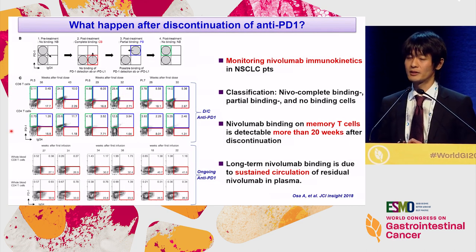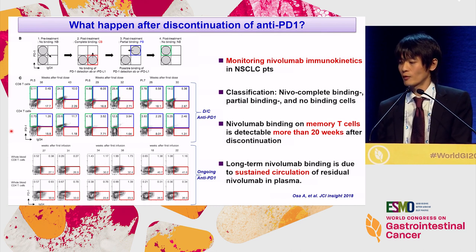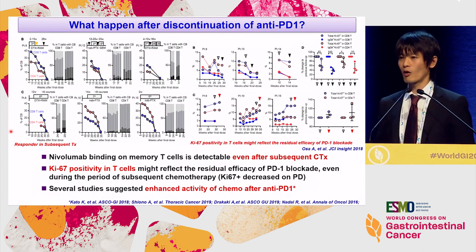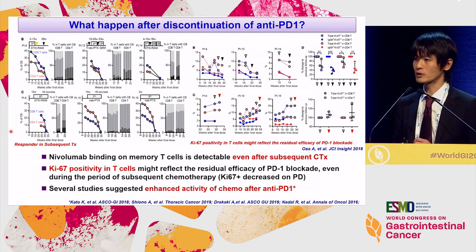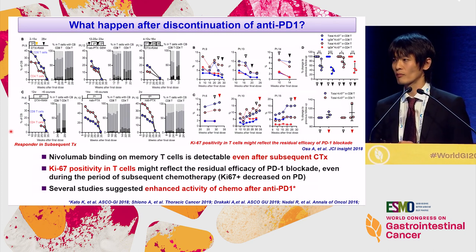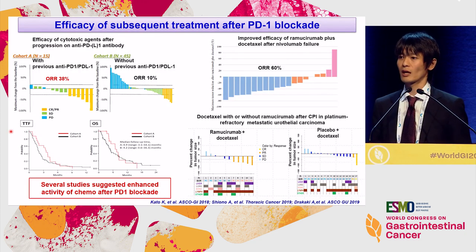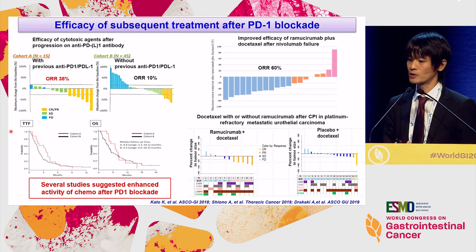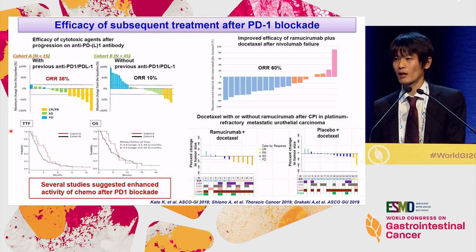An important caveat is that treatment duration is not the same as effective treatment period. A very interesting paper published in JCI Insight from a Japanese group investigated binding of anti-PD-1 on memory T cells. It was detectable even after five months since last administration of anti-PD-1 therapies, and also detectable even after subsequent therapy. Ki67 positivity in T cells predicted outcome after discontinuation and efficacy of subsequent therapy. This may partially explain the carryover effect or enhancement of subsequent treatment. Not a few reports have suggested better activity of cytotoxic agents or molecular targeting agents after checkpoint blockade, including gastric cancer data from Japan showing very high response rates after checkpoint blockade.